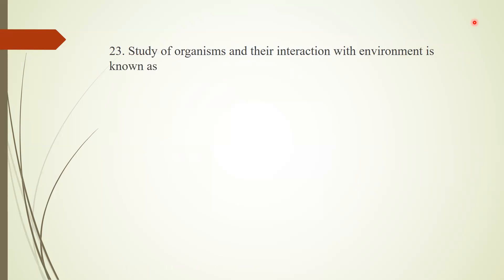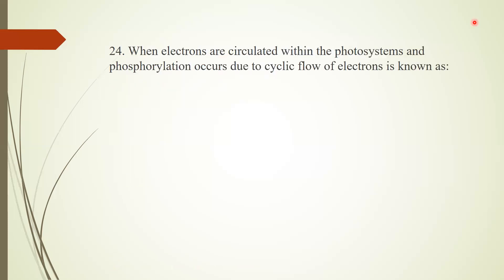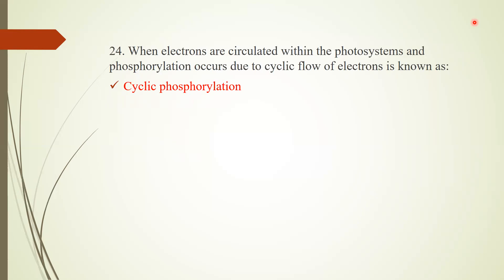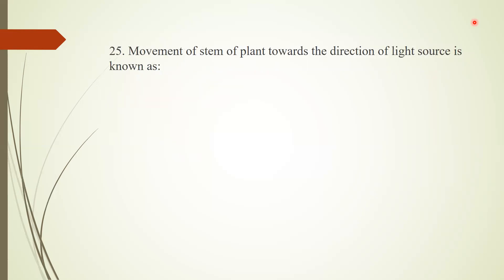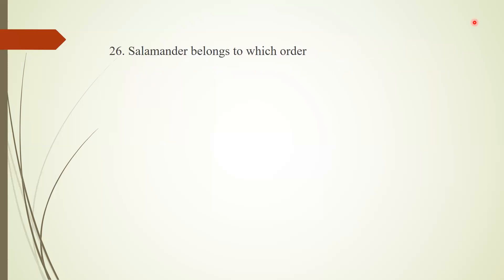Question 23: Study of organisms and their interaction with the environment is known as ecology. Question 24: When electrons are circulated within the photosystems and phosphorylation occurs due to the cyclic flow of electrons, this is known as cyclic phosphorylation. Question 25: Movement of the stem of a plant towards the direction of a light source is known as phototropism.